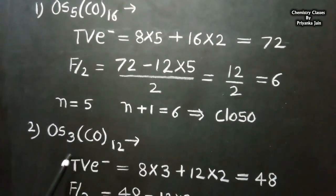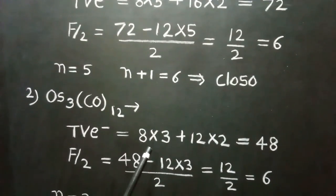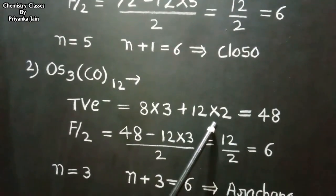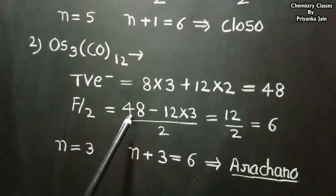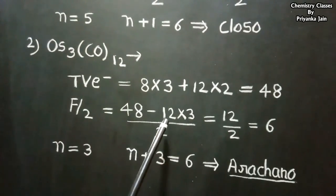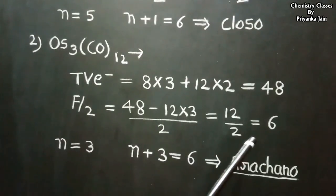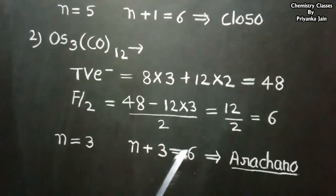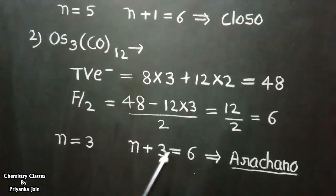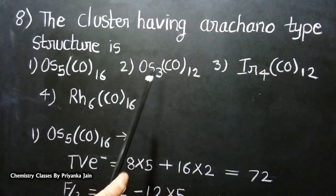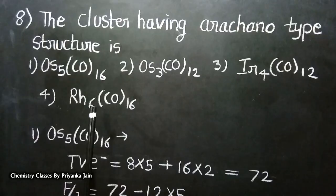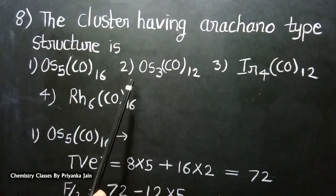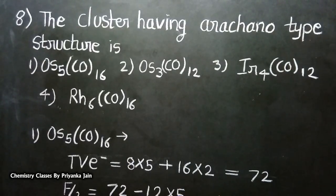For OS3(CO)12: 8×3 + 12×2 = 48 total valence electrons. SEP = (48 − 12×3) / 2 = 6 pairs, with 3 vertices. Since 6 = n+3, this cluster has the arachno structure. So option B, OS3(CO)12, is the correct answer. The other two clusters do not possess the arachno structure. These are some problems from CSIR NET exams that we have solved using Wade's and Mingos rules.